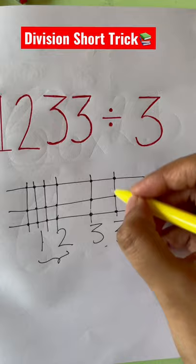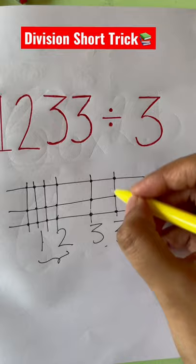So my answer is just count the numbers: 1, 2, 3, 4. So it's 4, one line here and one line here, and that's 411.